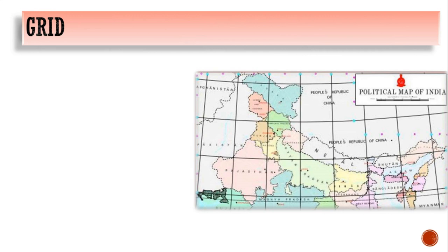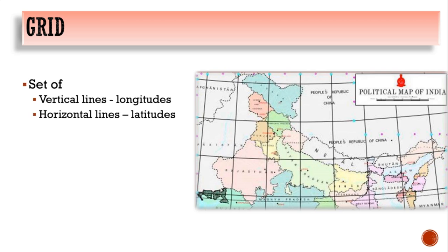The next element is the grid system. A grid system on a map is usually square and is represented by drawn lines creating those squares. It is a set of vertical lines — longitudes — and horizontal lines — latitudes. The purpose of the grid system is to give each point on the map an identifier or address, meaning it is used mainly to locate places.